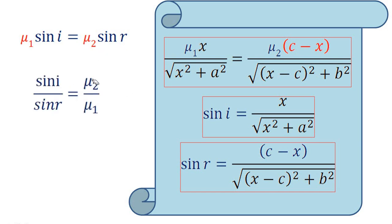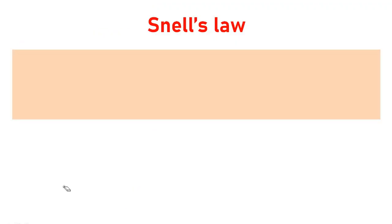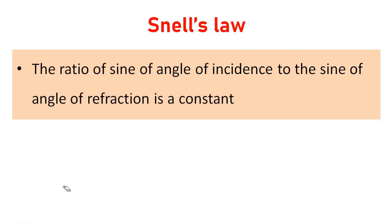So sin i divided by sin R equals mu2 divided by mu1. This is called Snell's law. The ratio of sin i to sin R is a constant, equal to mu2 over mu1.